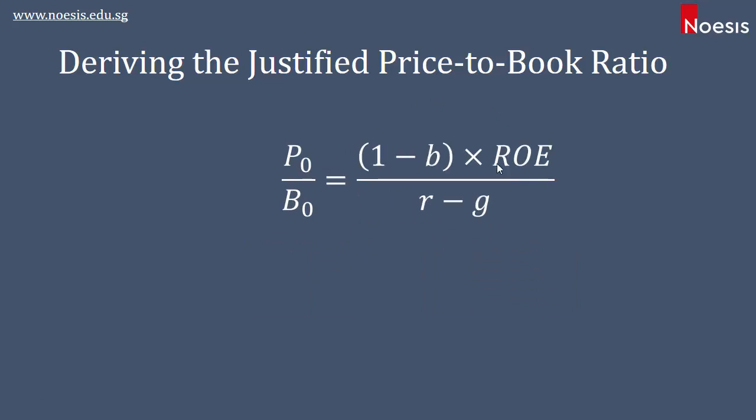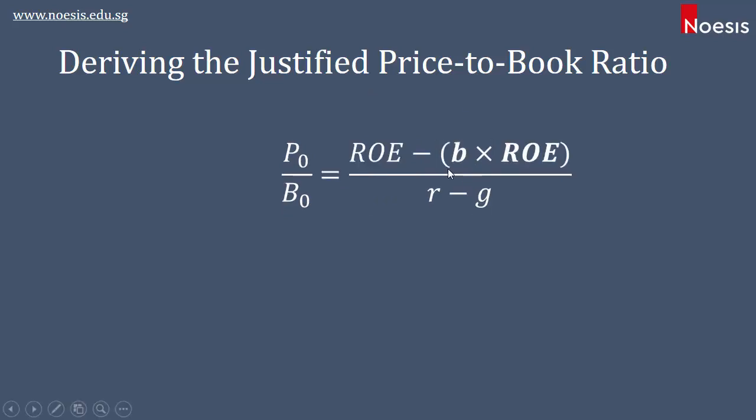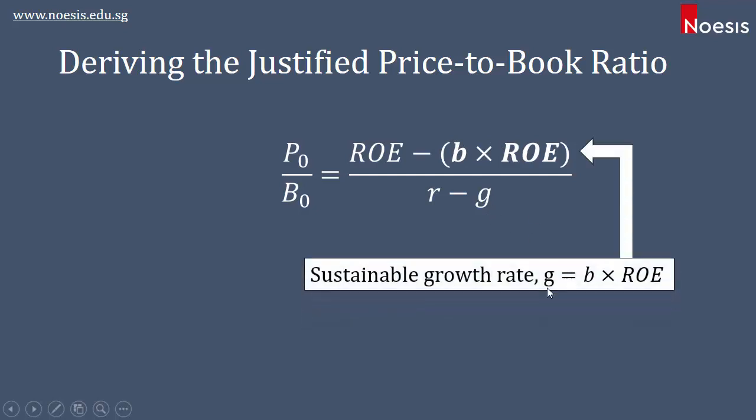Now, expanding the numerator, we will then have ROE minus the retention rate multiplied by ROE, and recognizing that the retention rate multiplied by ROE would be equal to the sustainable growth rate, which is G.